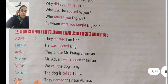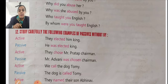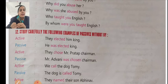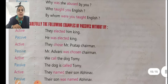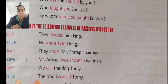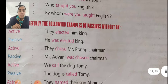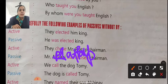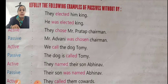Twelfth point: passive without 'by'. Here 'by' is not used. You simply need to show the action first, showing that it was done by the subject. Examples: 'They elected him king.' Passive: 'He was elected king.' 'They chose Mr. Pratap chairman.' Passive: 'Mr. Pratap was chosen chairman.' Active: 'We call the dog Tommy.' Passive: 'The dog is called Tommy.'